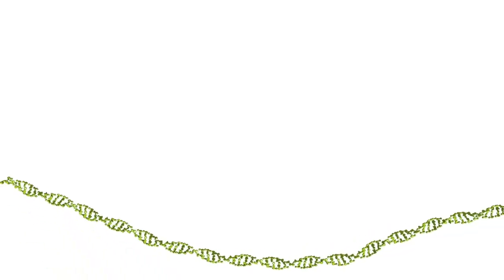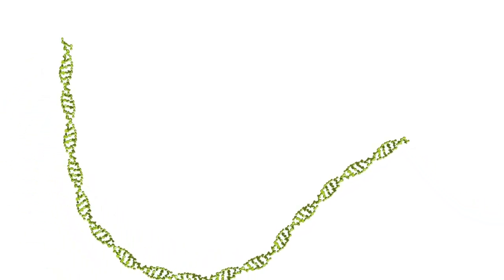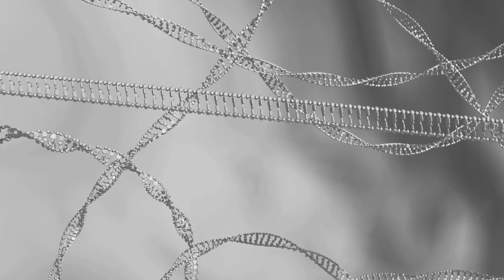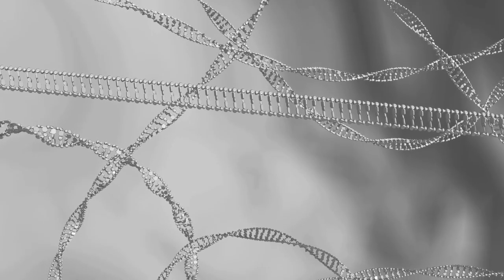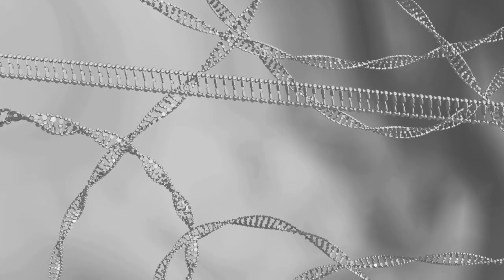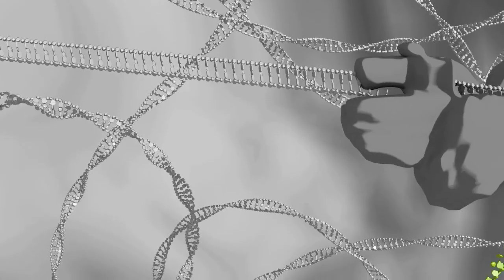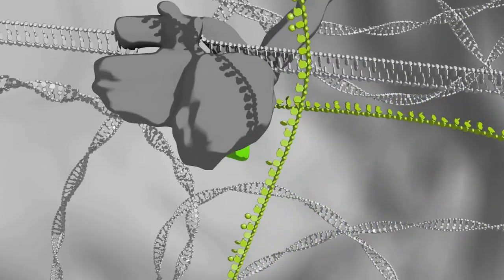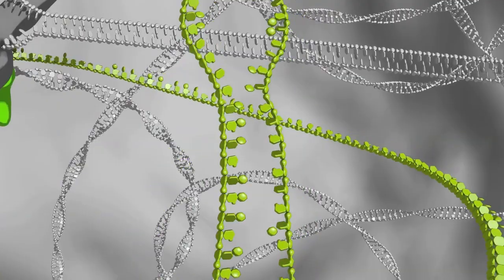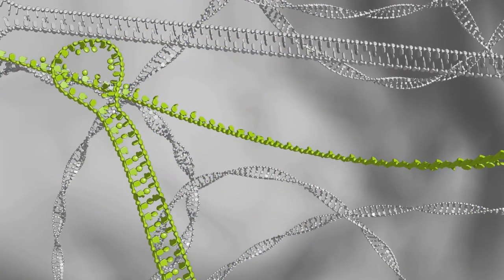Endogenous duplex RNA can arise from the normal transcription of genomic loci that have extensive hairpin structures, or from the annealing of sense and antisense RNAs that have both been transcribed from a given locus. Exogenous sources of double-stranded RNA include viral RNAs and duplex structures that have been synthetically introduced into cells by scientists for experimental purposes.